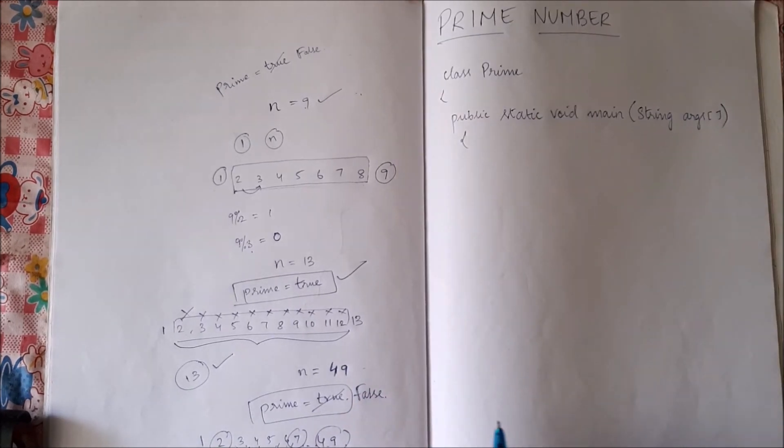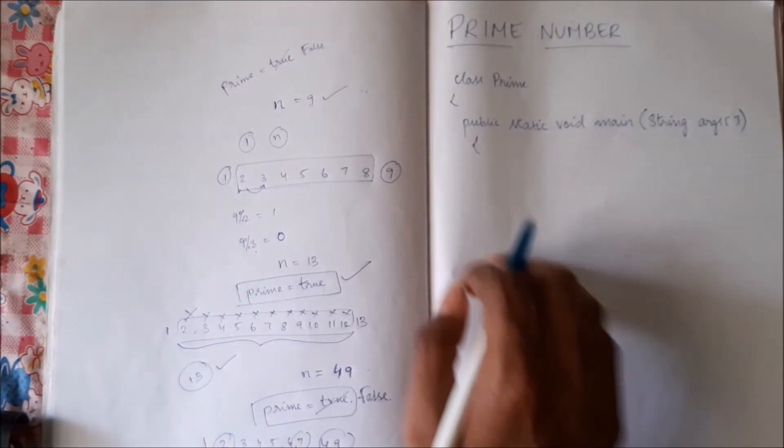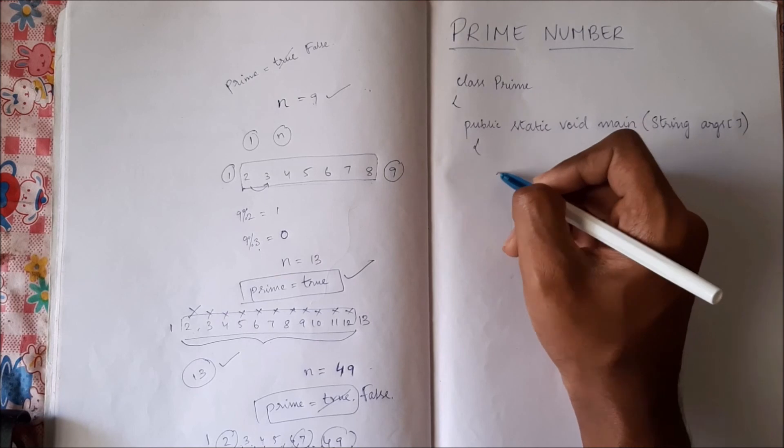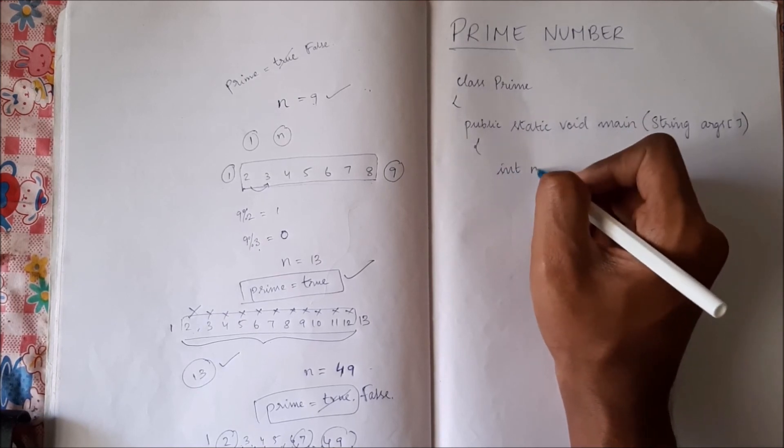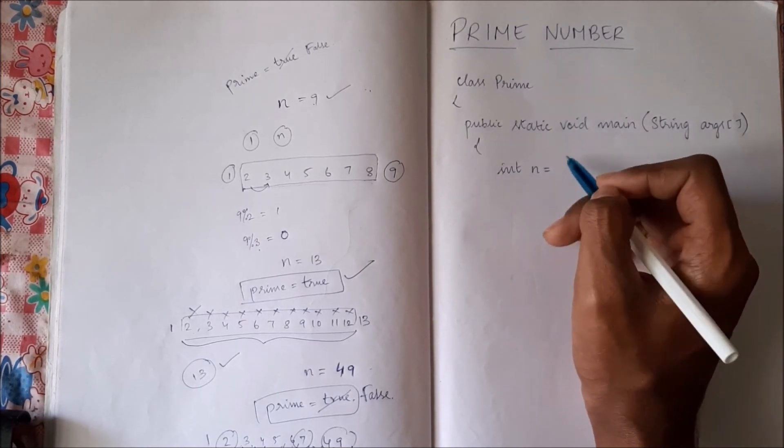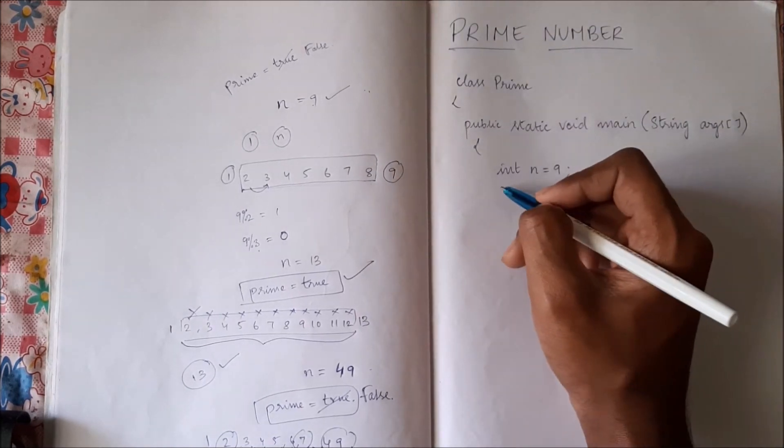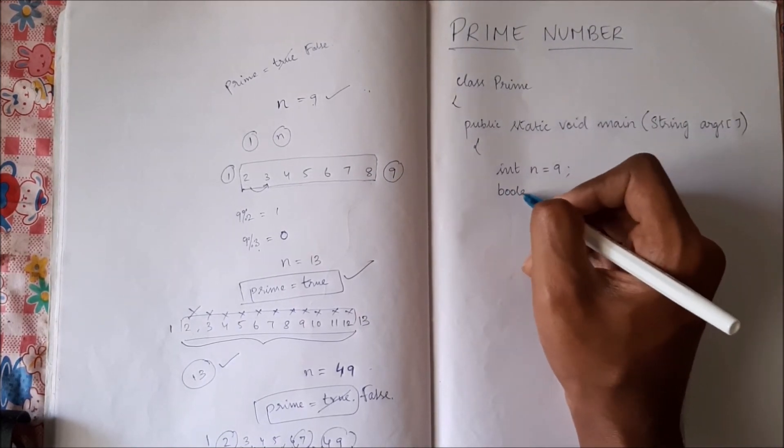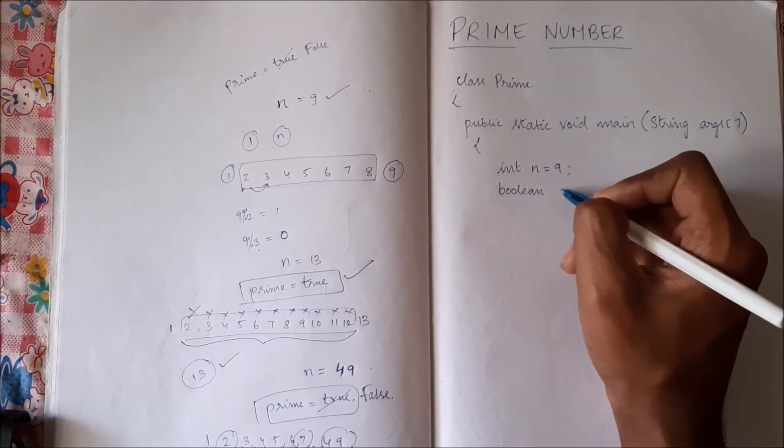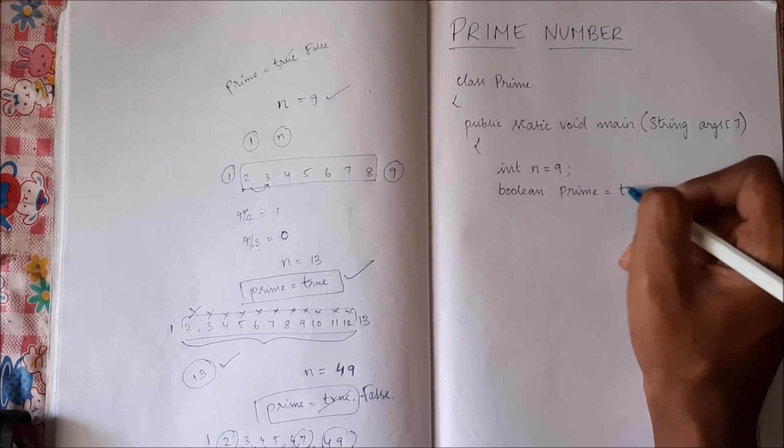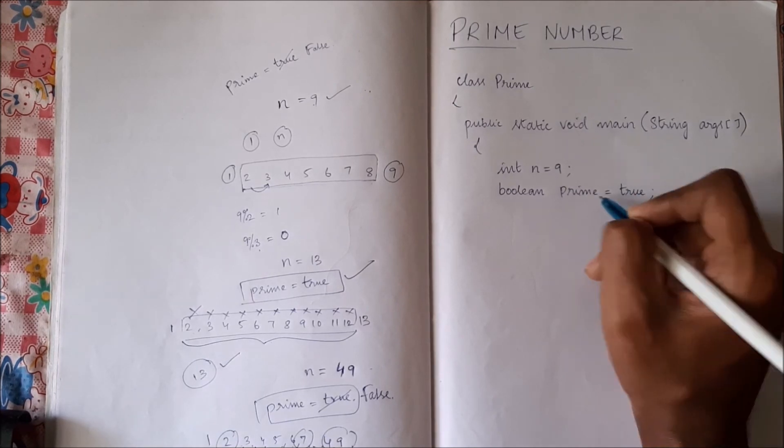So the same thing we will convert it into a program. So we will take one variable say int n equal to, let us take 9 for now. Now we will have a Boolean variable as true. It is an assumption.